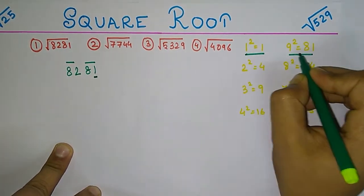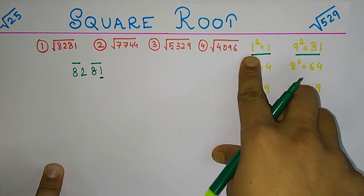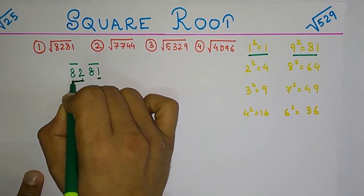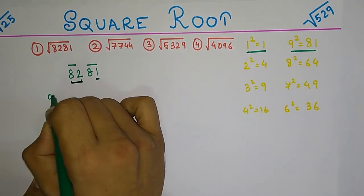To find that, you need to look at the leftmost part, that is 82. 82 is close to 9 squared which is 81. 10 squared is much greater than it, so we are going to take 9.